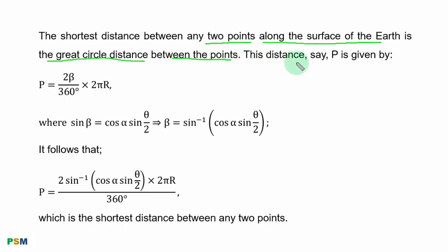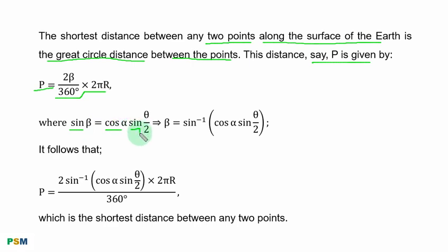This distance, say P, is given by P equal to 2 times angle beta over 360 degrees times 2 pi times the radius of the Earth, where sin beta is equal to cos alpha times sin(theta over 2). Taking the inverse sine of both sides to get beta: beta equals inverse sine of (cos alpha times sin(theta over 2)).